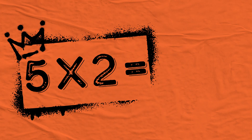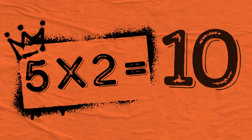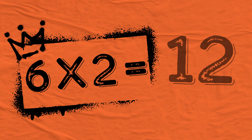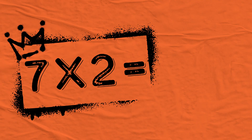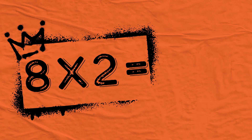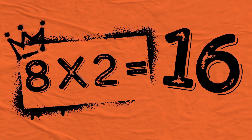5 multiplied by 2 is 10, and 6 multiplied by 2 is 12, 7 multiplied by 2 is 14, and 8 multiplied by 2 is 16.